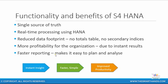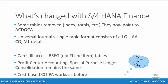This allows for faster reporting and makes it much easier to plan and analyze results. Just to quickly recap what's changed with S4HANA Finance: some tables have been removed such as your index tables, totals tables, and certain line item tables. The single journal entry table format consists of all GL, asset accounting, controlling, and material ledger details. You can still access some legacy tables via proxy tables which point to those legacy tables in S4HANA. However, it's much easier to use the universal journal entry table, where you can see all the ledger information as well.